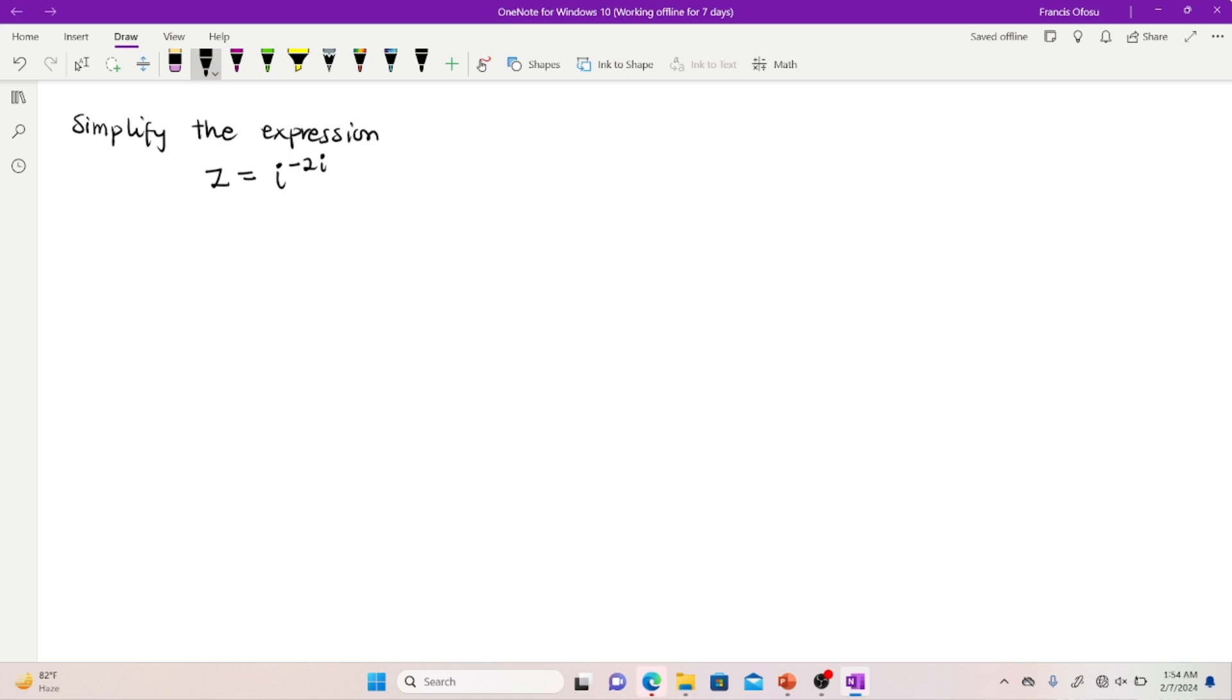So I have a problem saying simplify the expression below. z is equal to i raised to the power negative 2i.